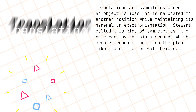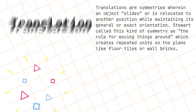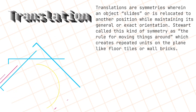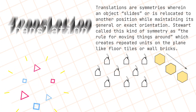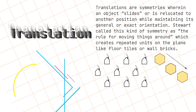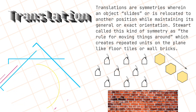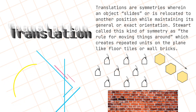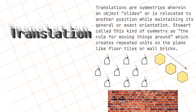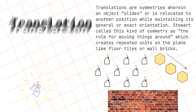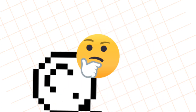Translations are symmetries wherein an object slides or is relocated to another position while maintaining its general or exact orientation. Stewart called this kind of symmetry the rule for moving things around, which creates repeated units on the plane — like floor tiles or wall bricks.